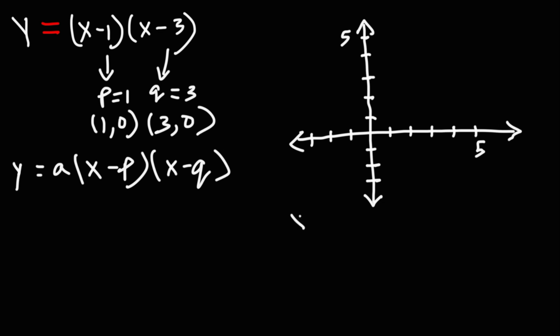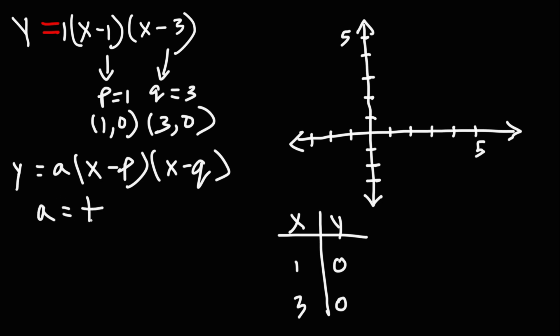With these intercepts, we can make a table. Once you know the x-intercepts, you want to find the vertex. For the x-intercepts, y is going to be 0. We don't have a number for a here, so it's automatically positive 1. Because a is positive, that tells us the graph is going to open upward.